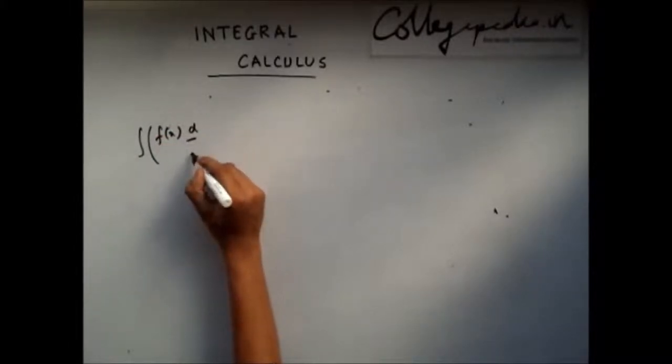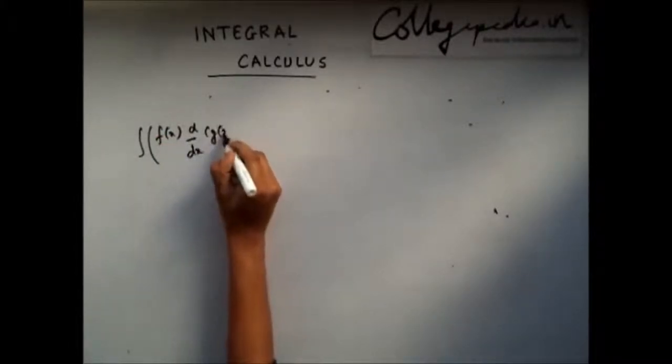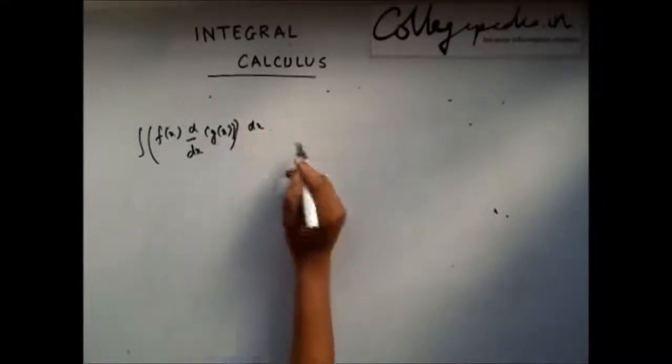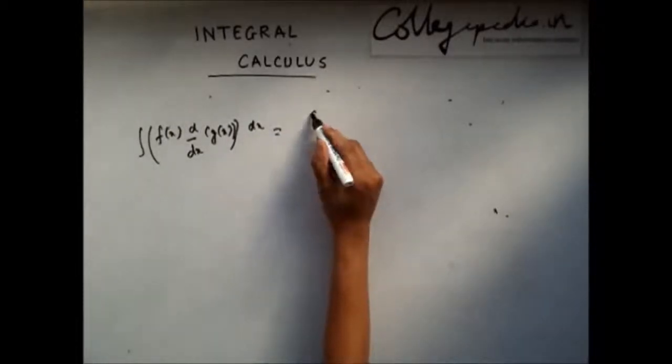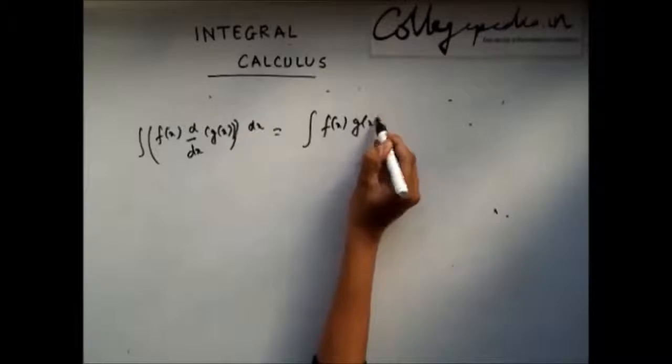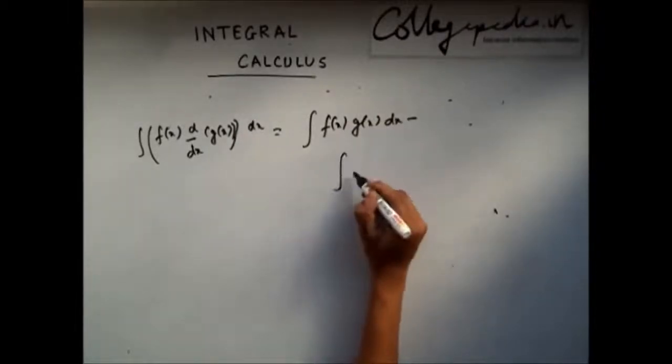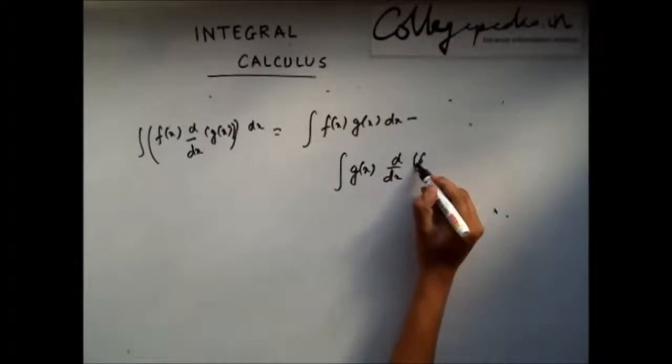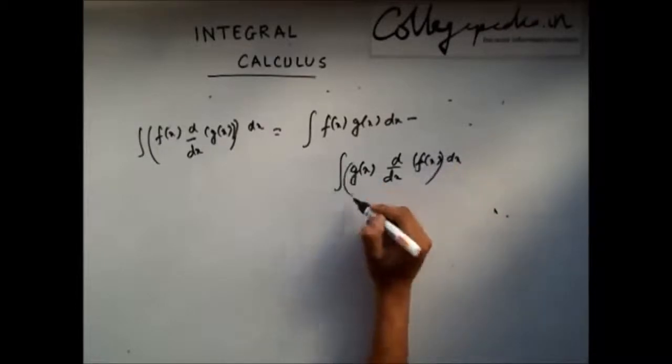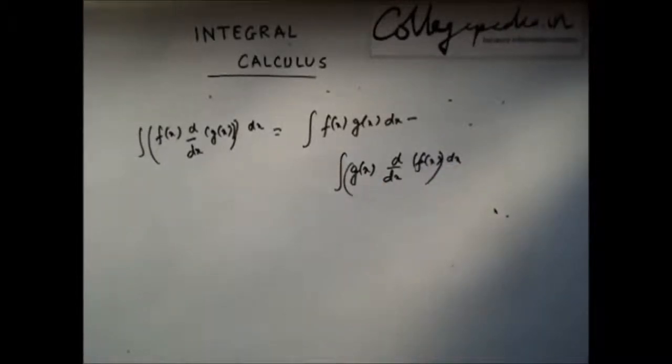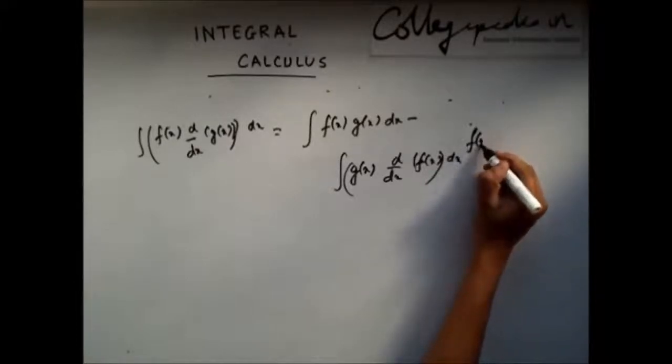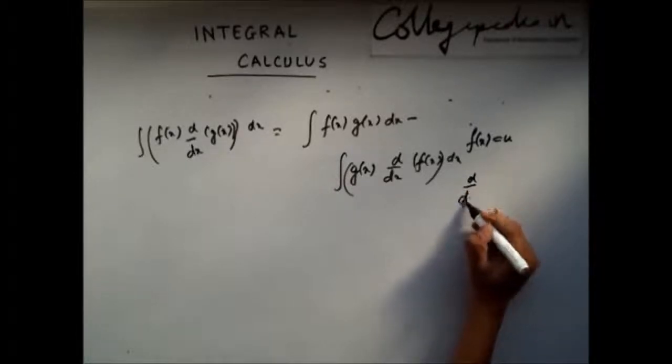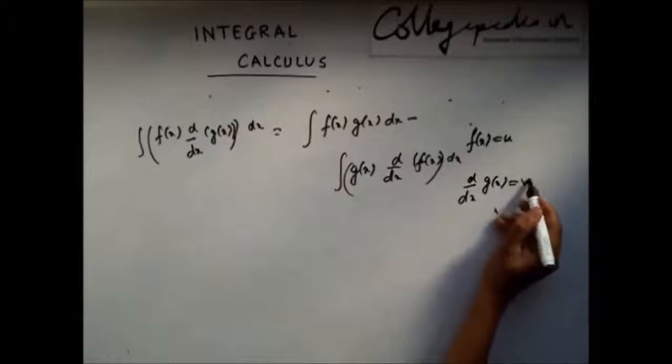So, f(x) into differentiation of g(x) dx. Integration is given by integration of f(x)g(x) dx minus g(x) into derivative of f(x) dx. Now, let us assume f(x) as u and derivative of g(x) as v.